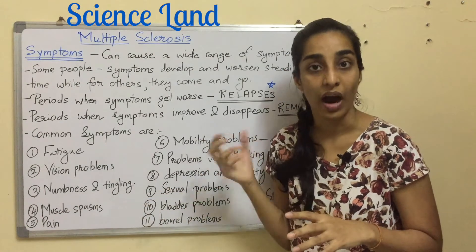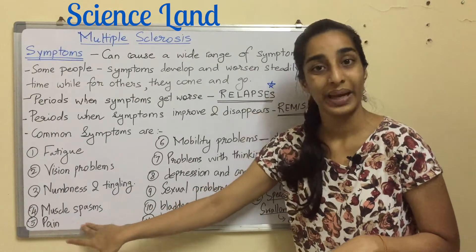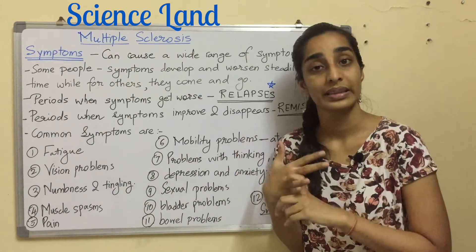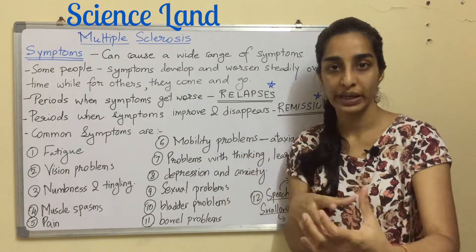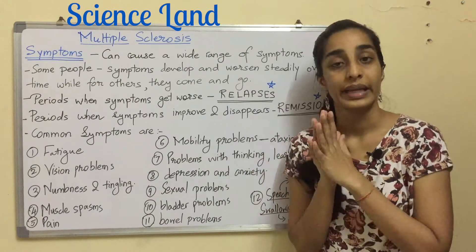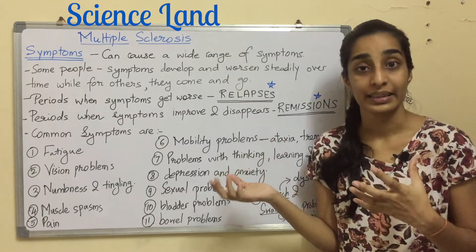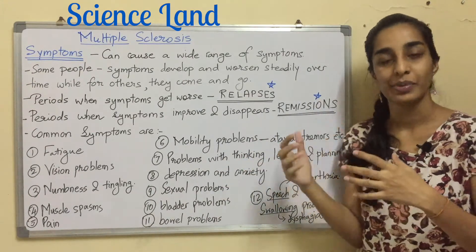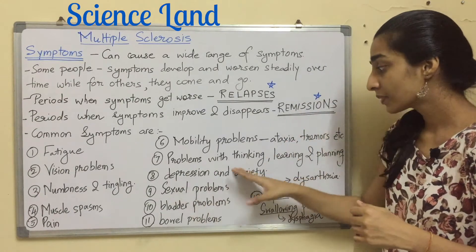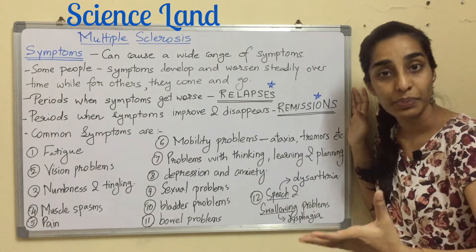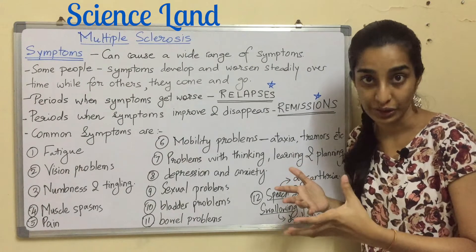Other symptoms include numbness and tingling in either the hands or the feet, muscle spasms, and pain — which can be either neuropathic pain or musculoskeletal pain. There are also mobility problems such as ataxia, which is a lack of balance and coordination, or tremors, which is shakiness of the limbs.